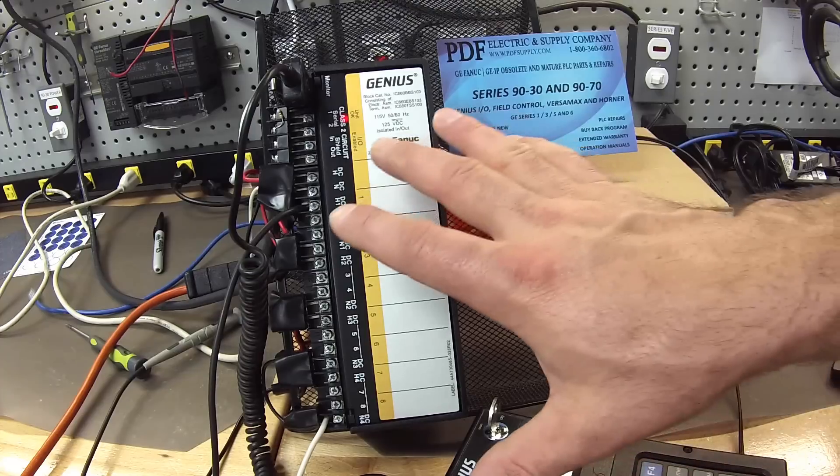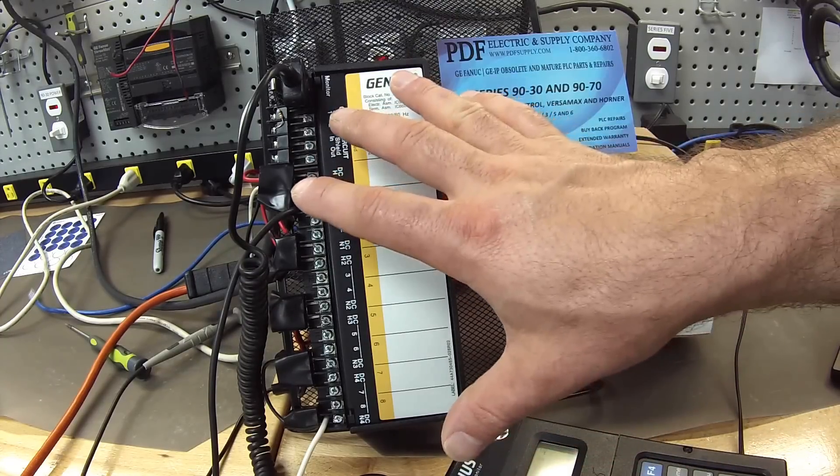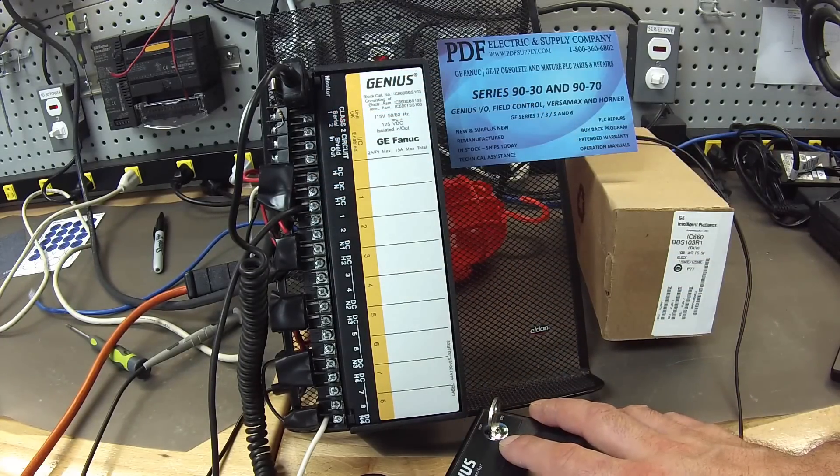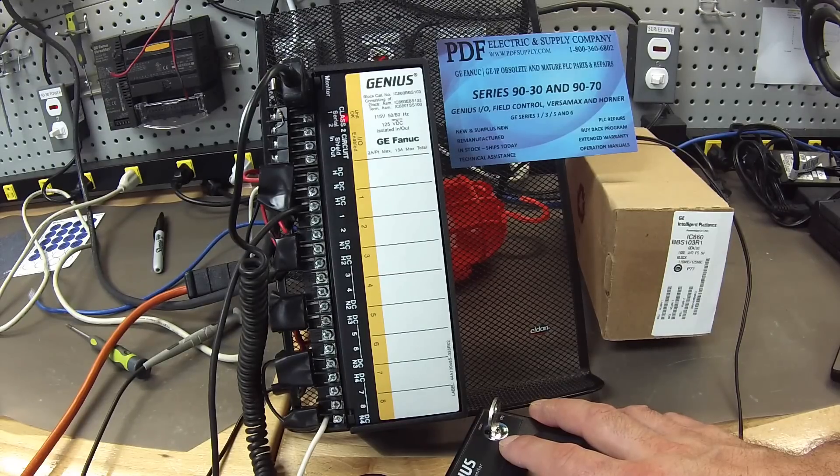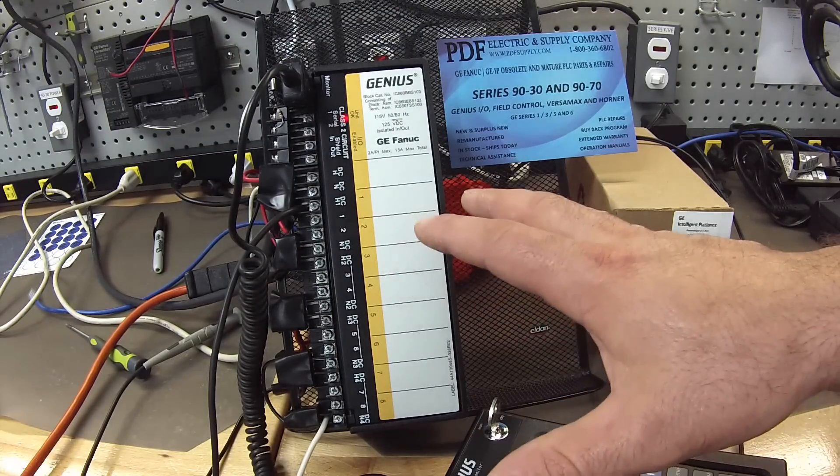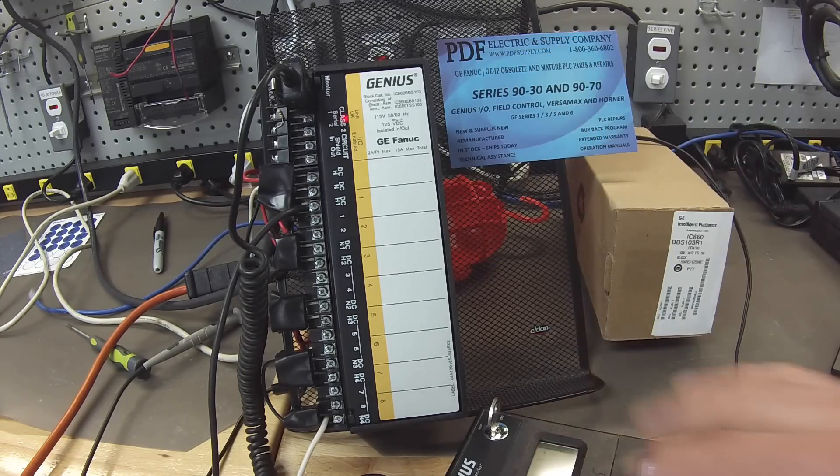Any of these things is a very common problem with an IC660BBS103 Genius Block, and it's something that we see and we do repair here at PDF Supply. We offer exchange programs, new and remanufactured products. So if that is something that you need or interests you, please see us at PDFsupply.com. Thank you.